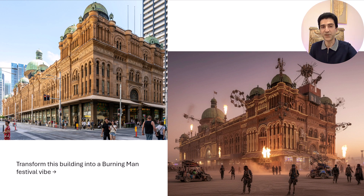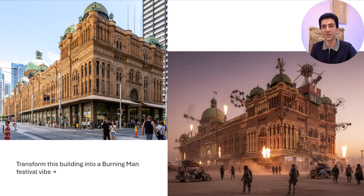Next use case is pure festival energy: turning a building into a Burning Man vibe. Suddenly your building sprouts neon sculptures, fire cannons and dust clouds. The AI doesn't hold back with colors — everything becomes glowing, metallic and oversized. But sometimes it goes too far and the building melts into abstract shapes. Still, that unpredictability fits Burning Man perfectly.